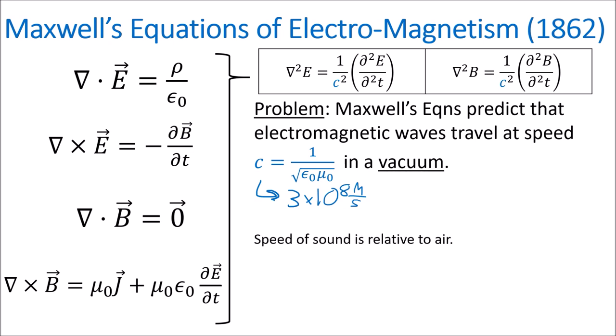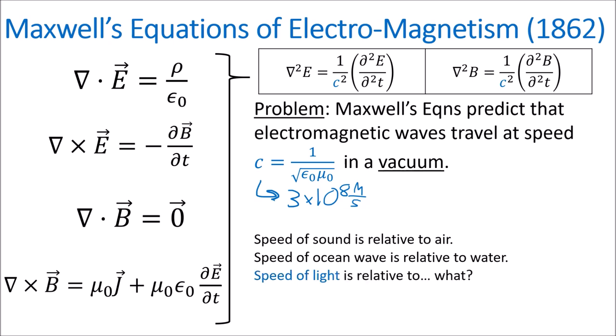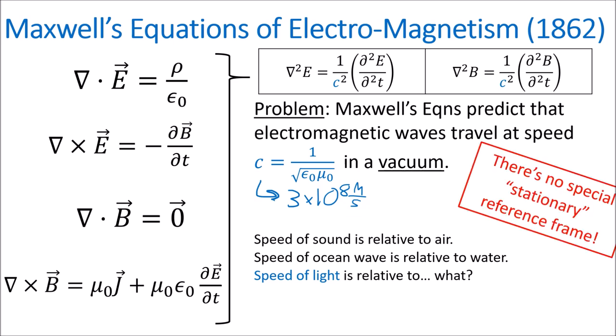Now we know that the speed of sound waves can be measured relative to air particles, and we know that the speed of ocean waves can be measured relative to water particles. But what is the speed of light measured relative to if it can travel in a vacuum? Galilean relativity tells us that there is no special stationary reference frame, and that all motion is relative to something else. So what are we measuring the speed of light relative to if it can travel in a vacuum, which is just empty space?